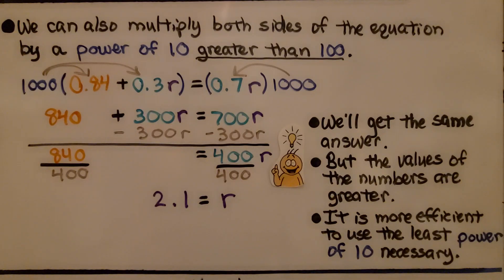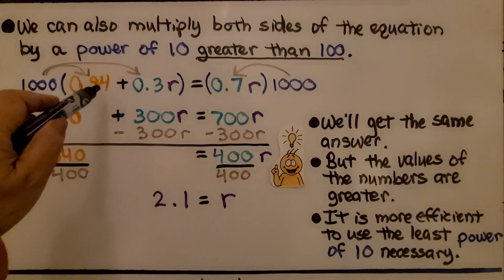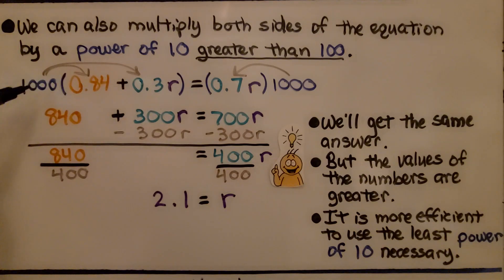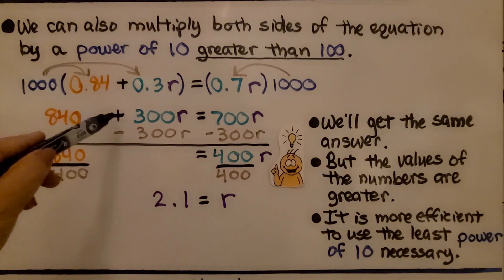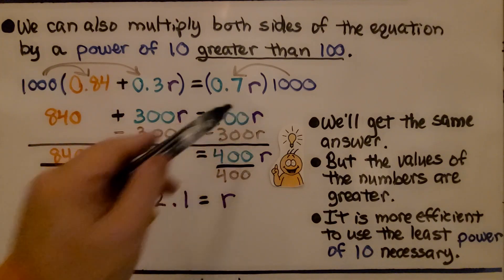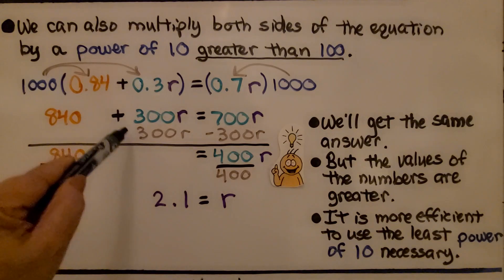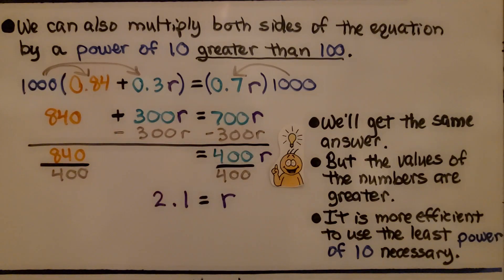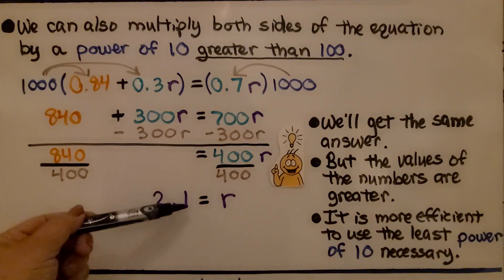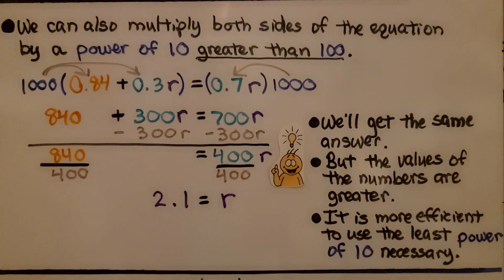Now keep in mind we can also multiply both sides of the equation by a power of 10 greater than 100. We know this is in the hundredths place, and before we multiplied by 100 to make this a whole number. If we wanted to, we could multiply each term by 1000. Instead of 84 as our whole number, we would get 840. We'd have an additional zero and it would be plus 300r equals 700r. We would still isolate r to one side of the equation, and we would still get that 2.1 equals r. We'll get the same answer, but the values of the numbers are greater.